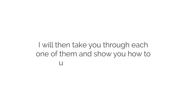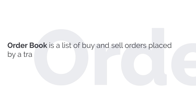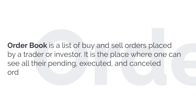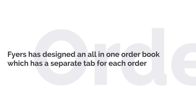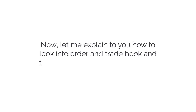Order book is a list of buy and sell orders placed by a trader or investor. It is the place where one can see all their pending, executed, and cancelled orders. Fires has designed an all-in-one order book which has a separate tab for each order status. Now let me explain how to look into the order and trade book and their usage on the Fires Web platform.